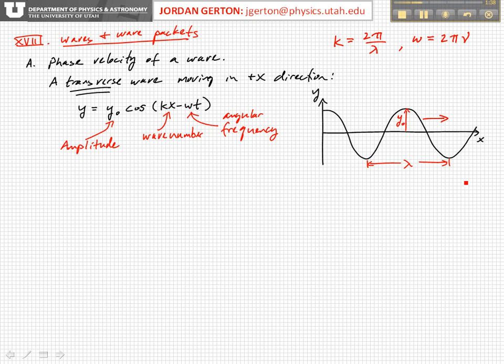And the omega is the angular frequency, which is equal to 2 pi times the just normal frequency. And so this equation describes a wave which is traveling to the right with wave number k and angular frequency omega.